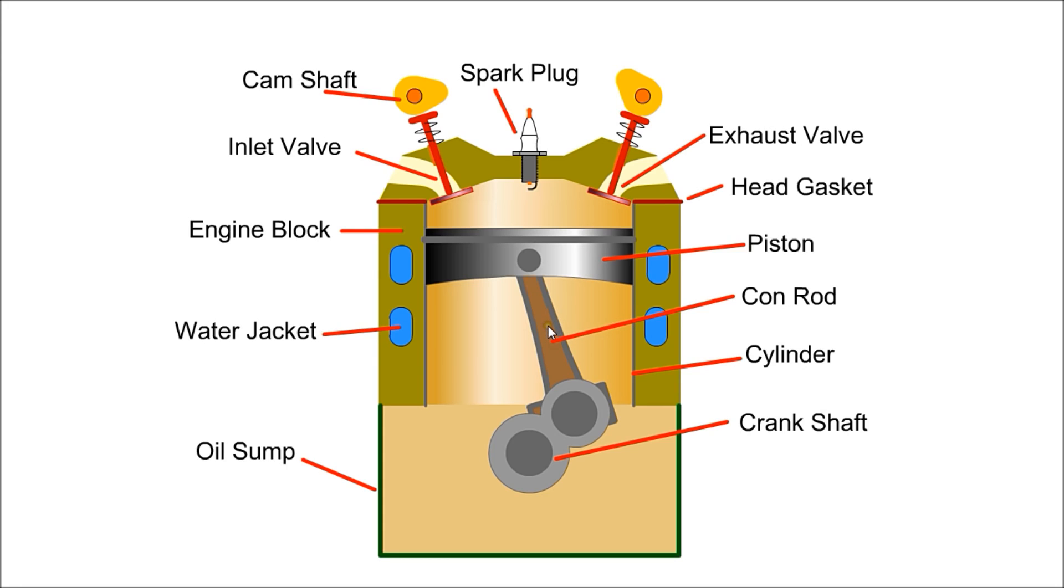The cylinder liner provides a smooth surface for the piston to move inside, while the con rod connects piston to the crankshaft, thus converting reciprocating motion of the piston to rotational movement of the crankshaft.